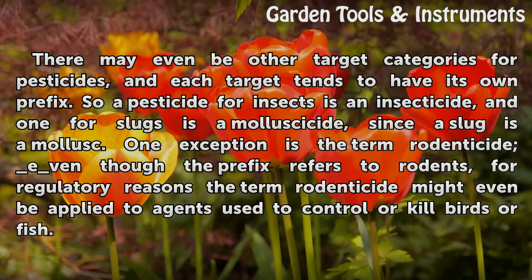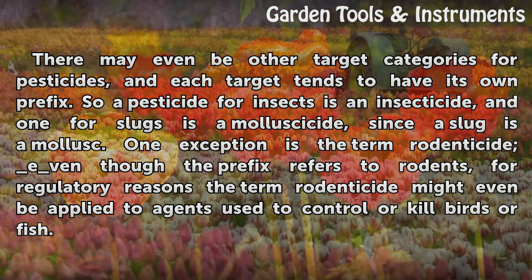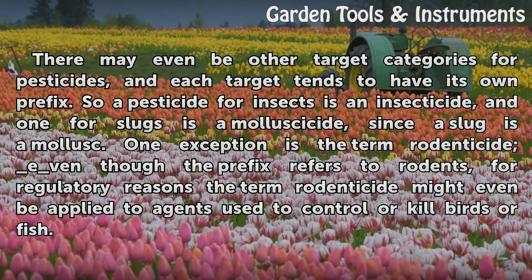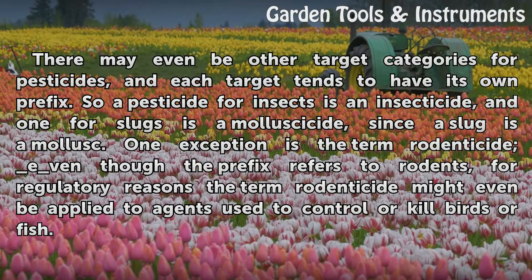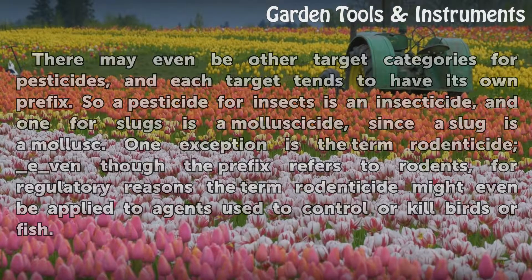There may even be other target categories for pesticides, and each target tends to have its own prefix. So a pesticide for insects is an insecticide, and one for slugs is a molluscicide, since a slug is a mollusc. One exception is the term rodenticide — even though the prefix refers to rodents, for regulatory reasons the term rodenticide might even be applied to agents used to control or kill birds or fish.